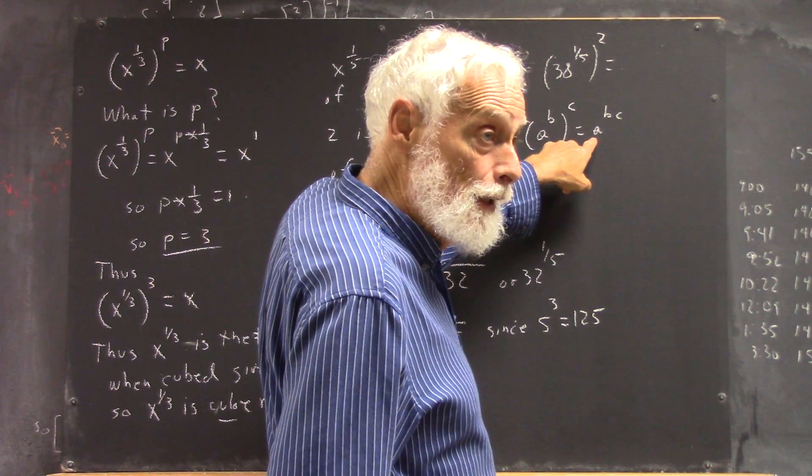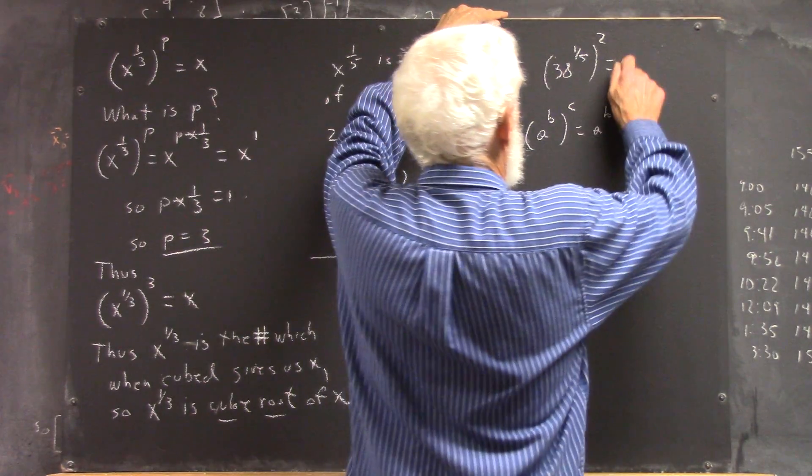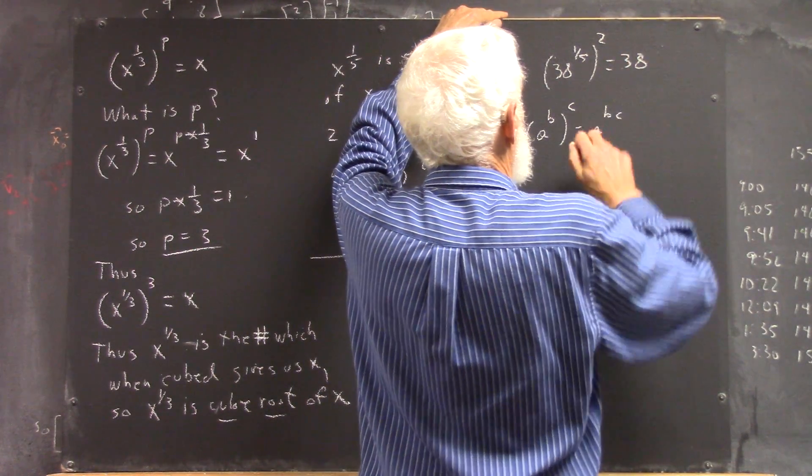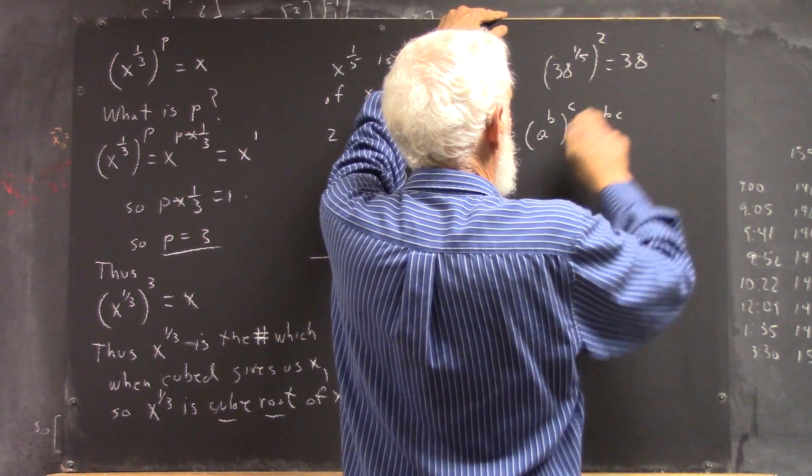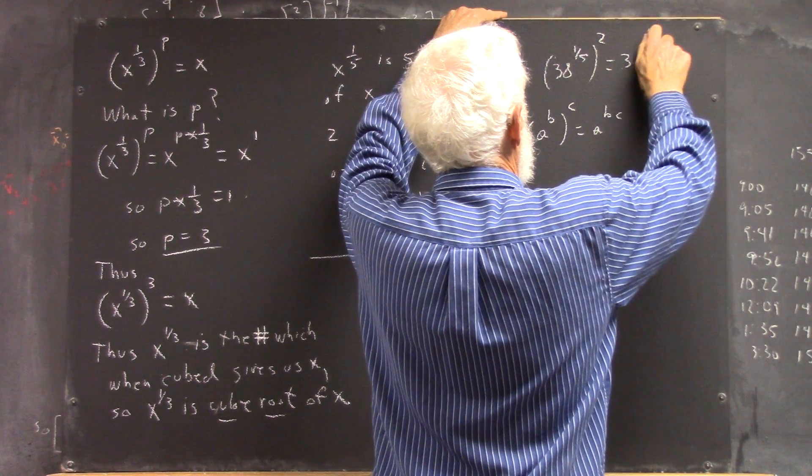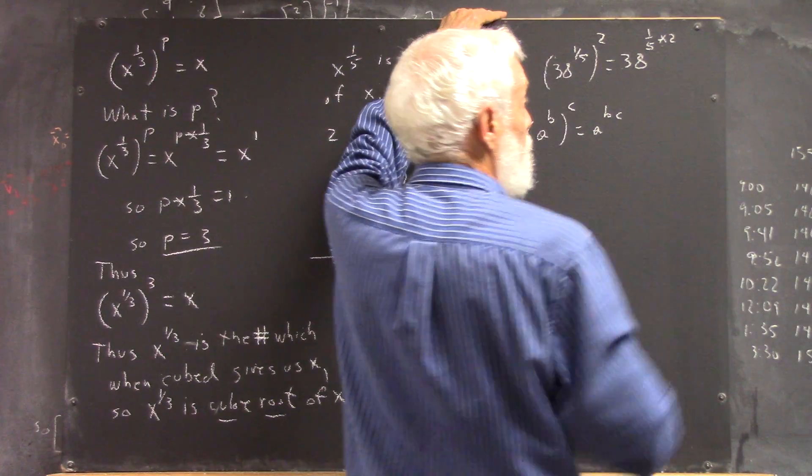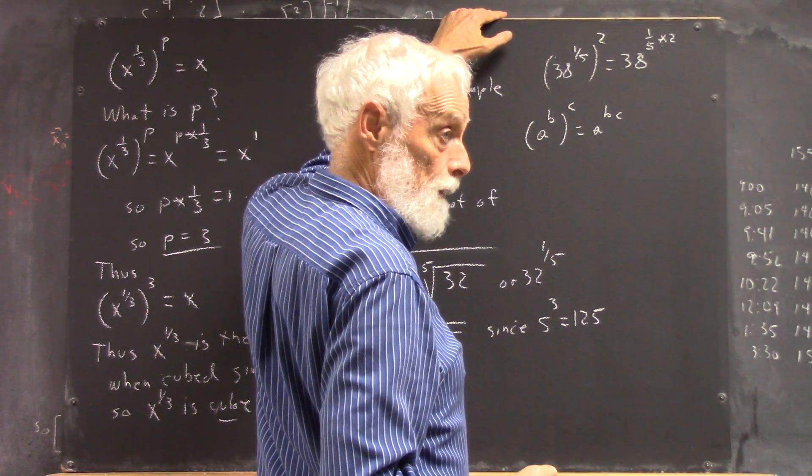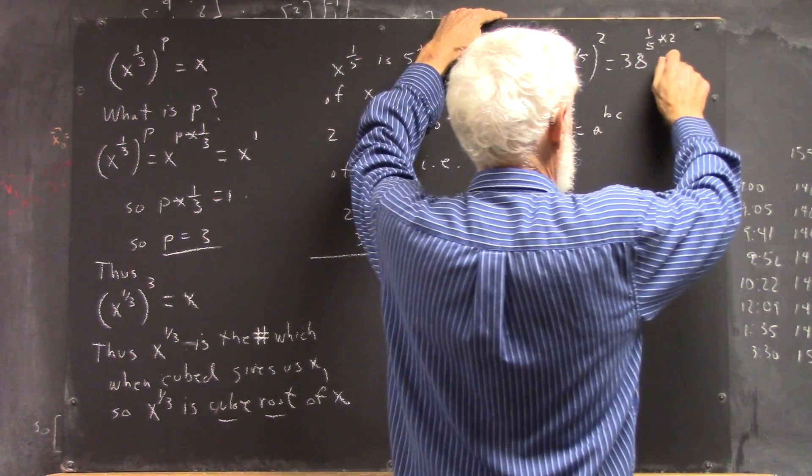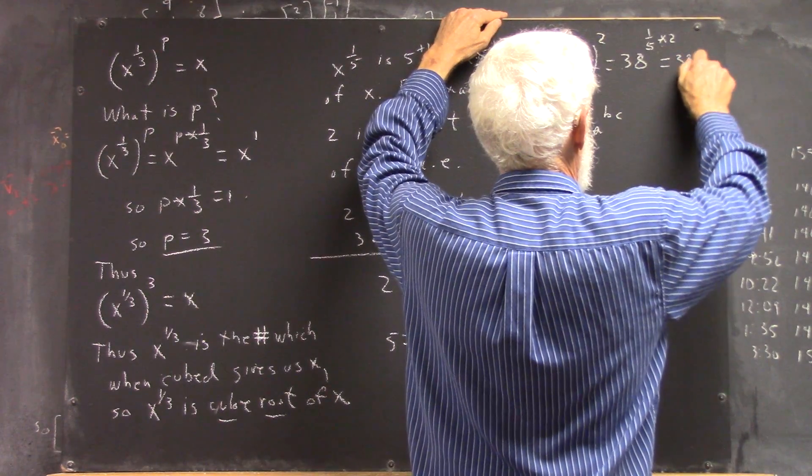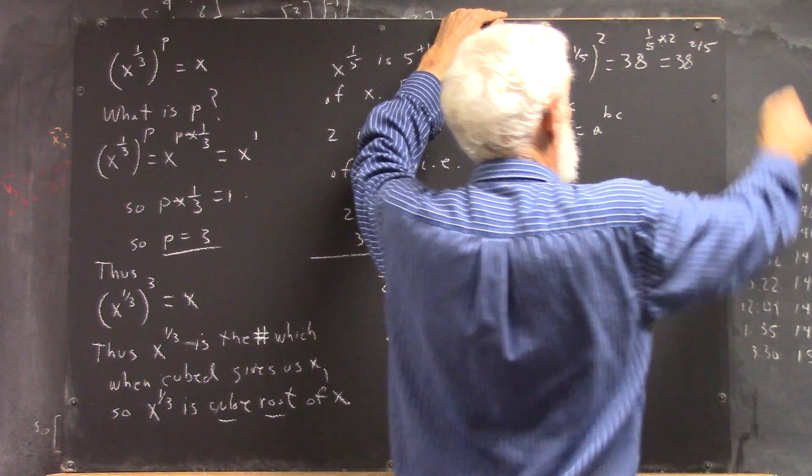So if we write this side, A is 38, and it's raised to B times C. B is one-fifth and C is 2. Well, one-fifth times 2 is two-fifths, so that's 38 to the two-fifths.